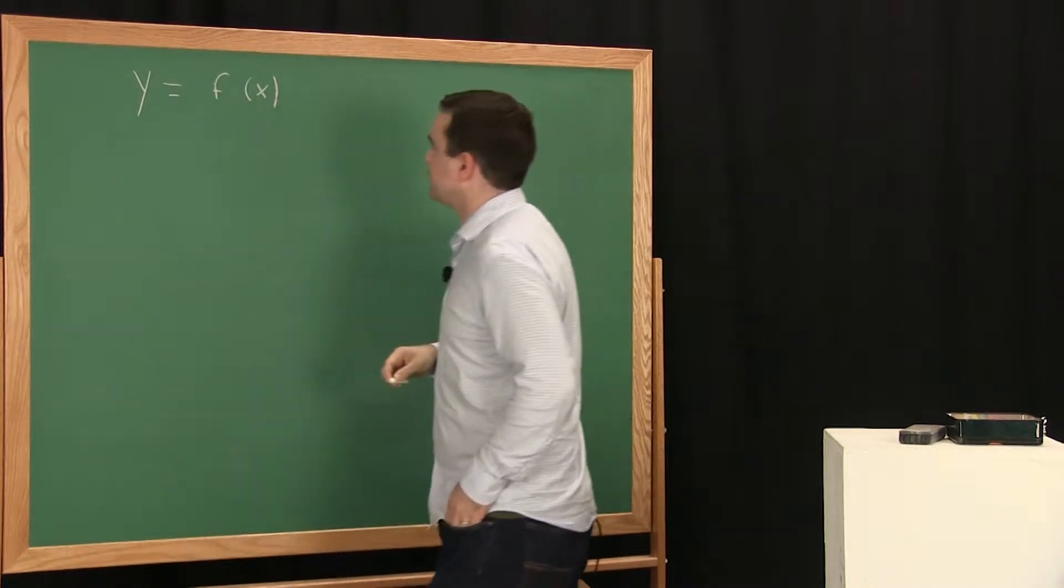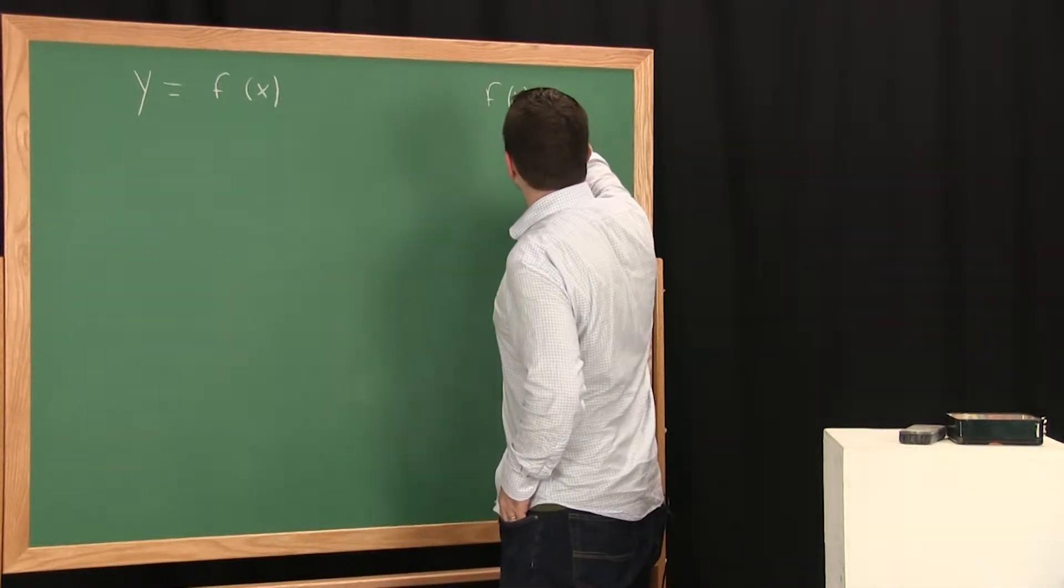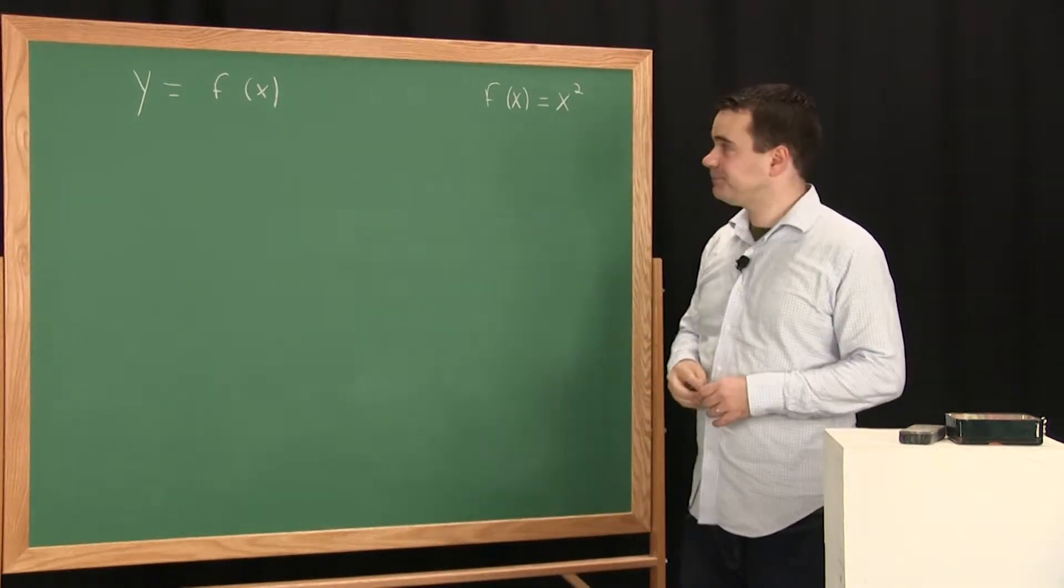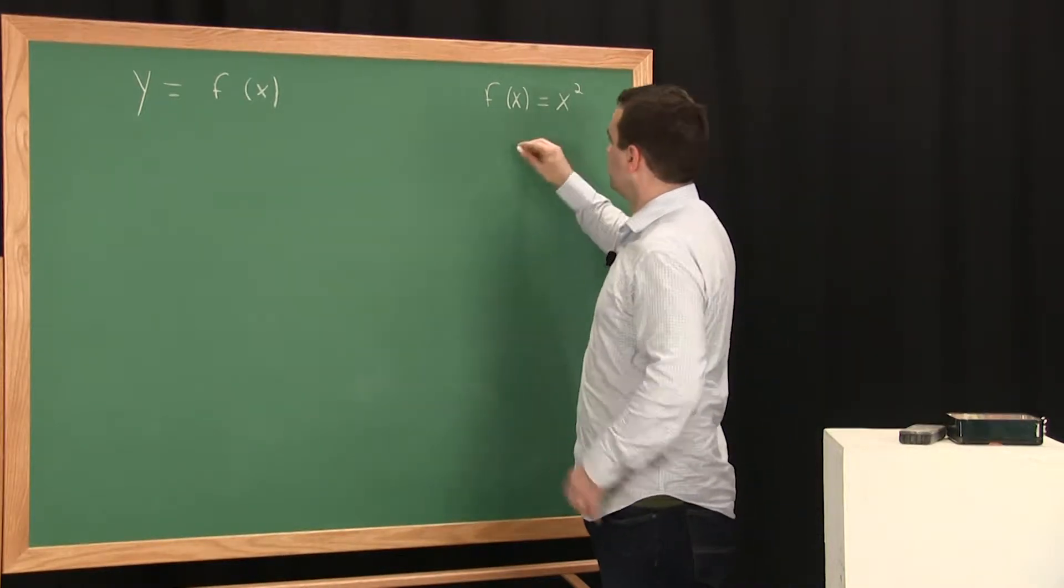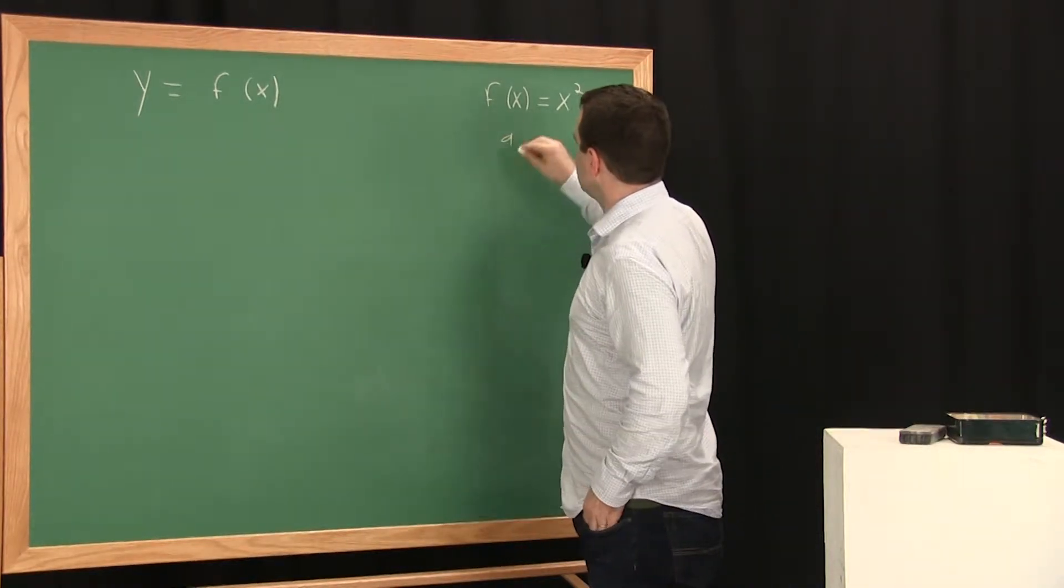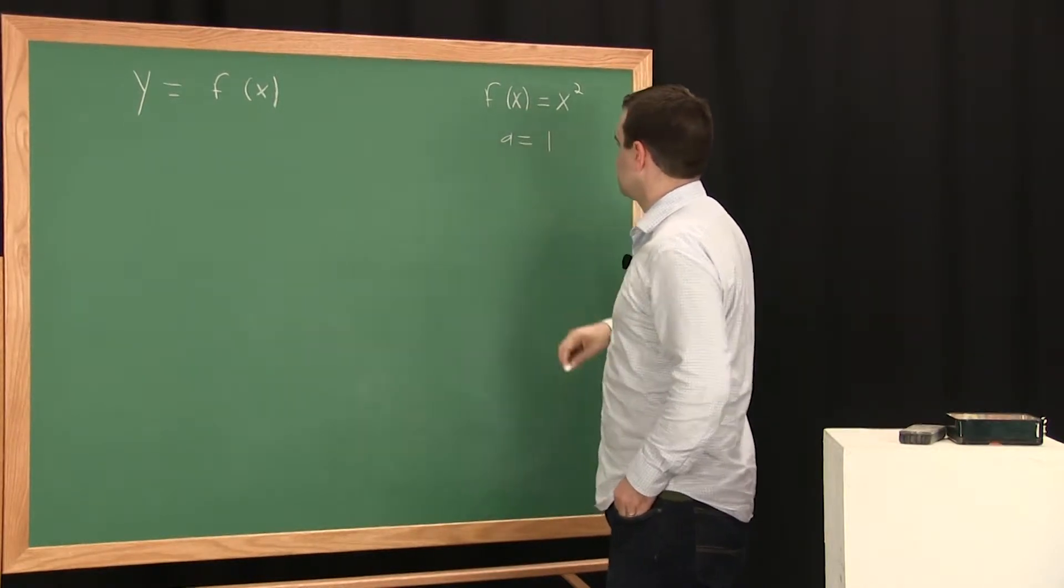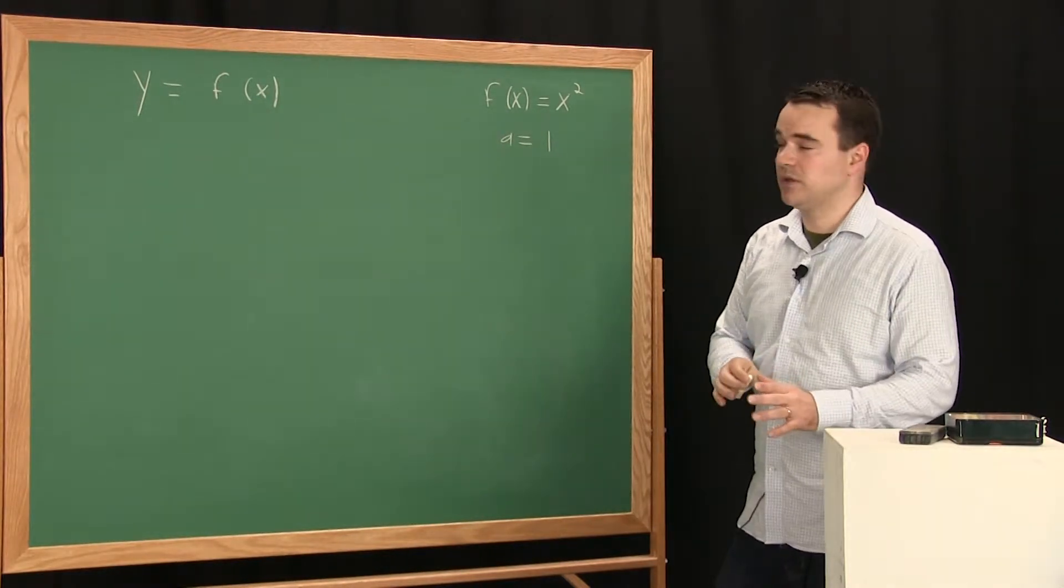And I'll give you an example to keep in your mind. So keep in your mind, maybe like that parabola x squared. And say that you just pick some point. We usually use the letter a. Let's keep in your mind a equals one. But we're doing the definition for any function for any point.